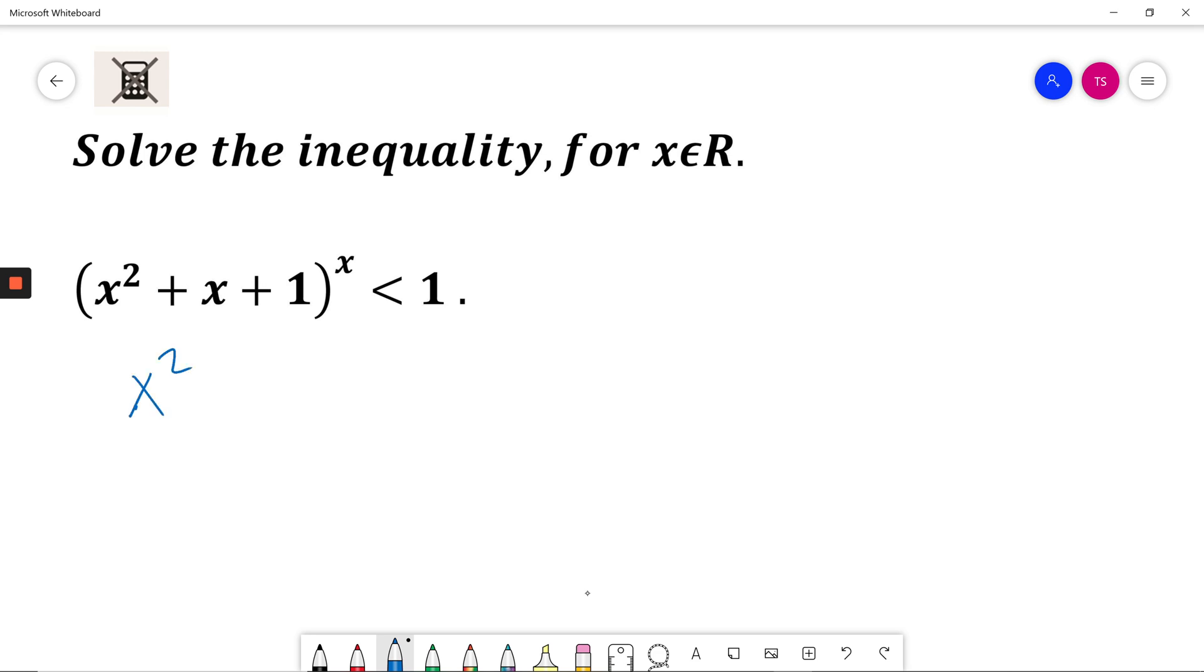x² + x + 1 is always more than 0 because the coefficient of x², a, is equal to 1 which is positive.